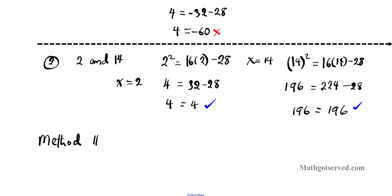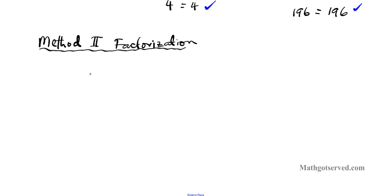Method 2 is factorization. Before we proceed with factorization of x squared equals 16x minus 28, we have to put it in standard form or make it equal to 0. Because when we put it in standard form, we can make use of the 0 product property after factoring it.